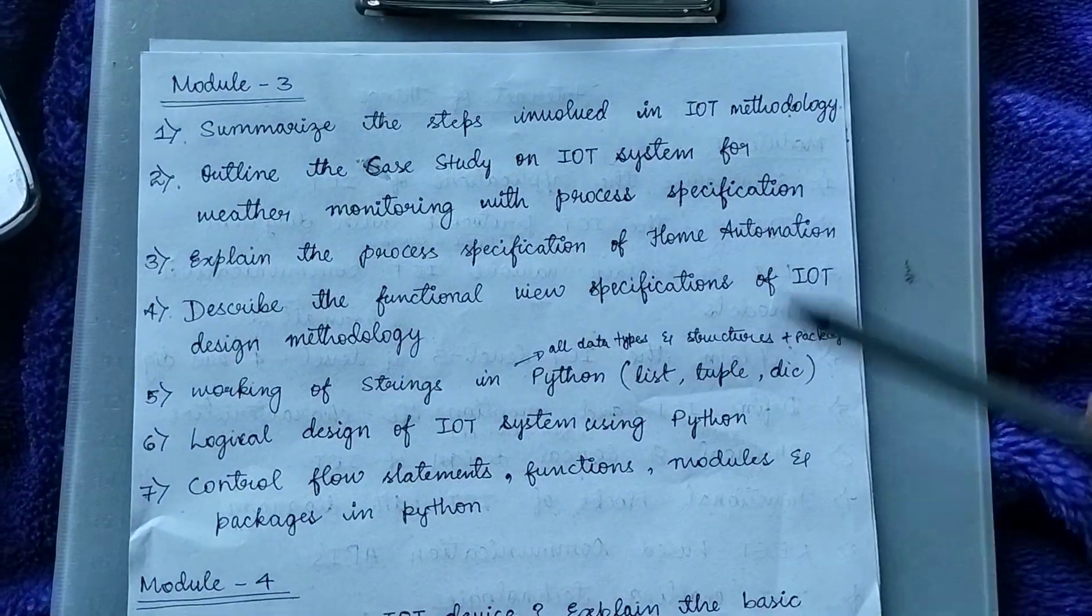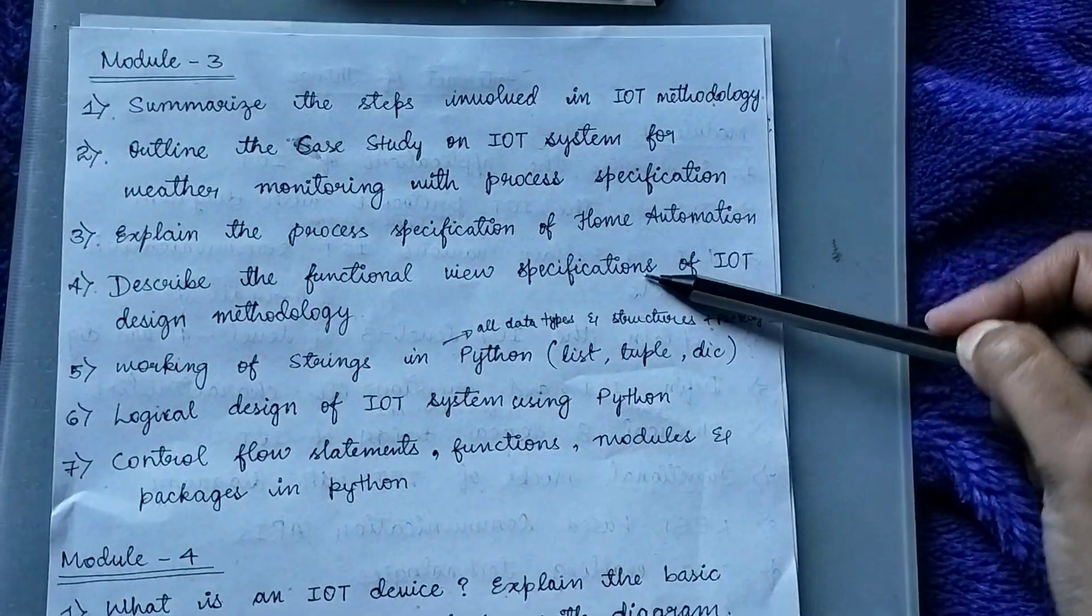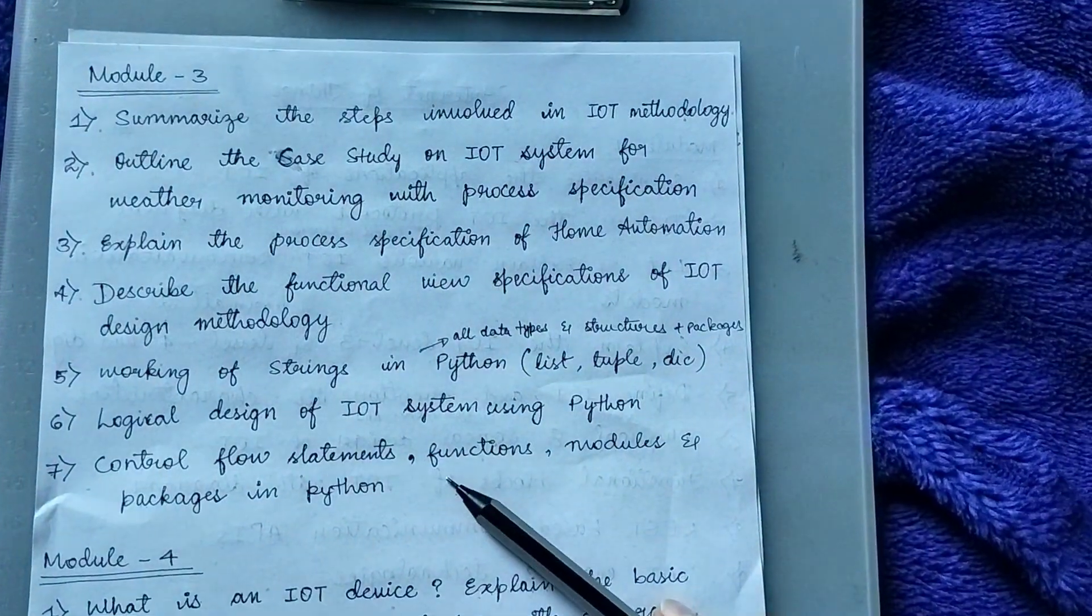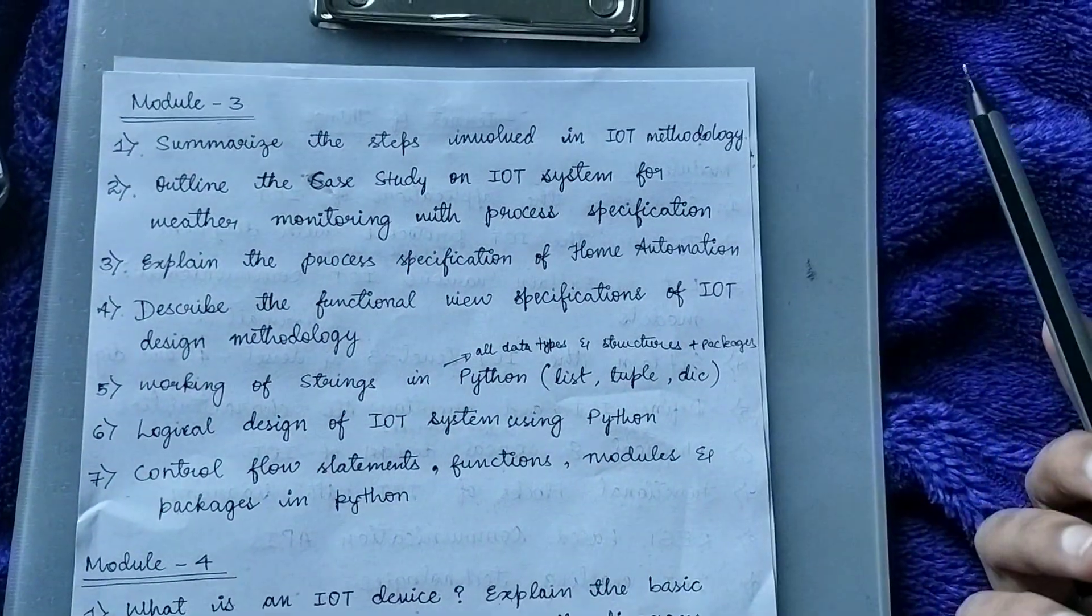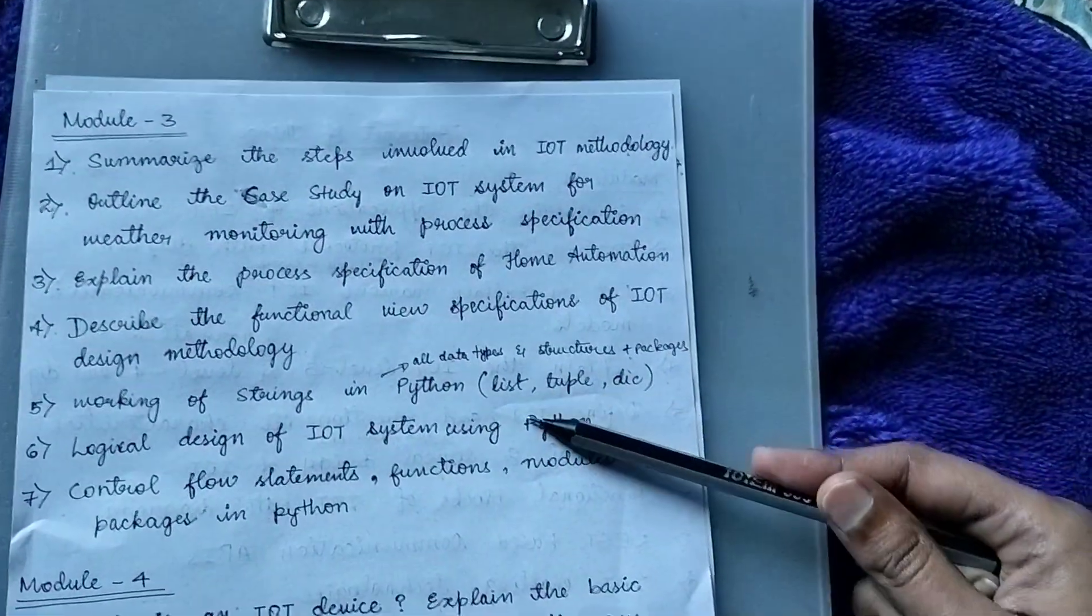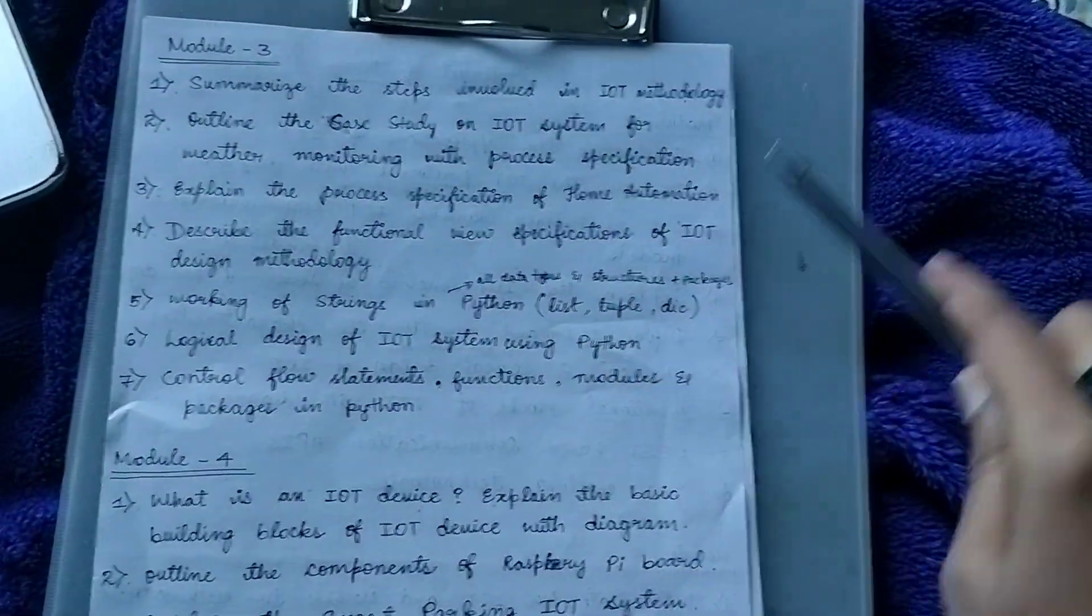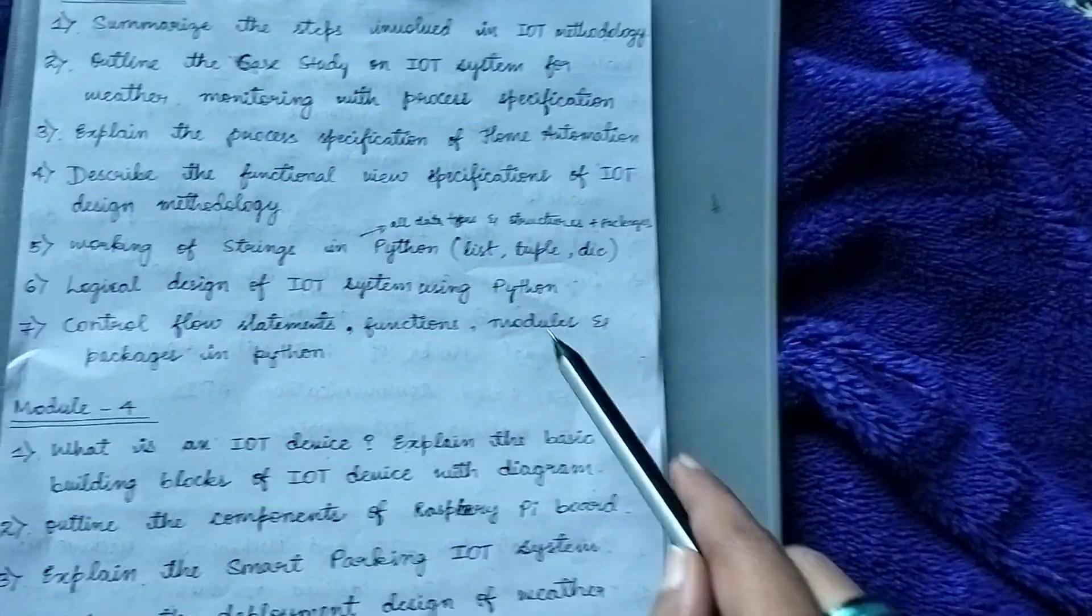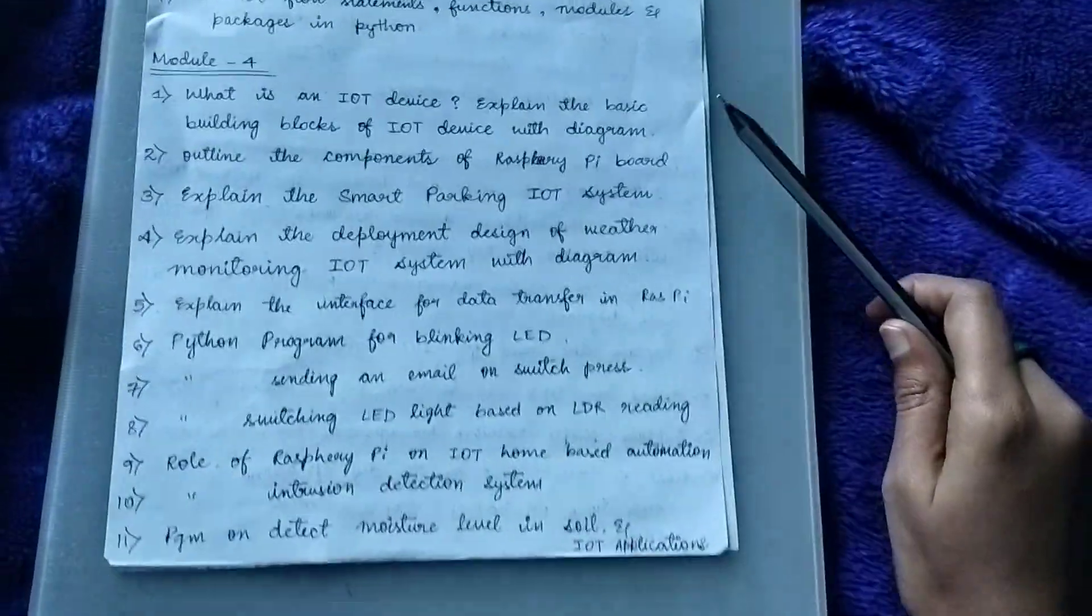See third module, first four questions you learn, like without missing any of these. Learn all four questions. For next few questions you have the choice, like you can learn about Python. They will ask a lot about Python so you have to learn about Python so that you can write in general. Like in general for one answer you learn and the same answer you write for different questions. You should learn it in that way about Python. And then this is fourth module.